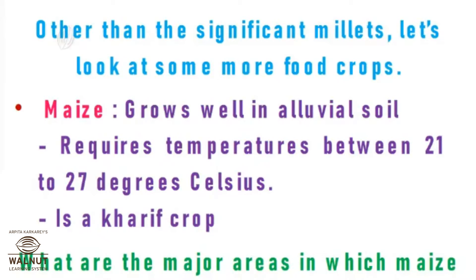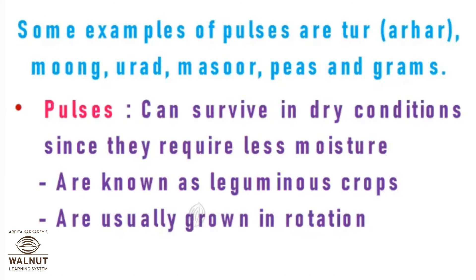Some examples of pulses are arhar, moong, urad, masur, peas, and gram. Pulses can survive in dry conditions since they require less moisture. They are also known as leguminous crops. Leguminous means the roots have nodules on them which can fix nitrogen from the soil.